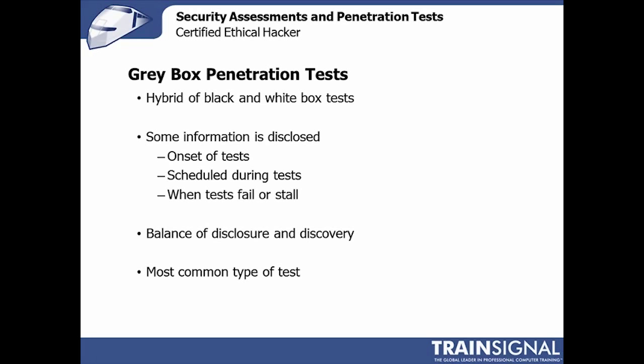The most common is the gray box penetration test, which is a hybrid of black box and white box. Some information is divulged at the outset — not just 'we want you to attack our web servers' but things like 'here are the FQDNs of these servers' or 'here's the IP range' or 'here's DNS' — but not too much information, like login credentials or server versioning. That balance is almost always what you get in these tests. It's critical to define this right up front, though most clients don't really want to hear 'black box, gray box, white box' — they just want to define what information they will and won't give you.